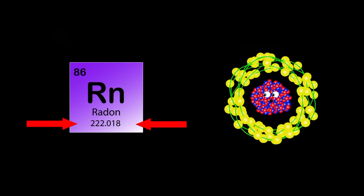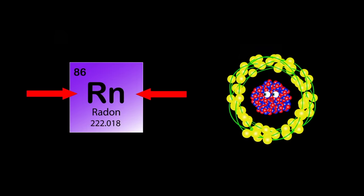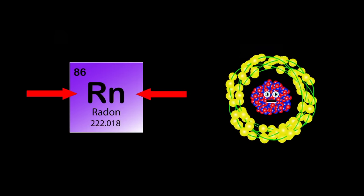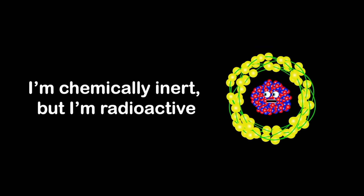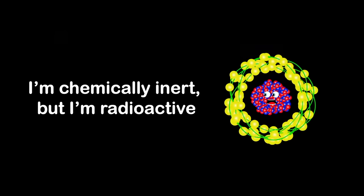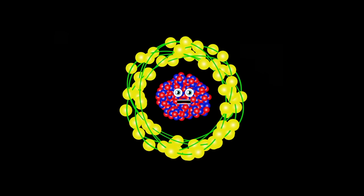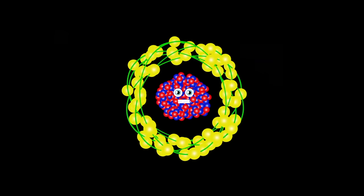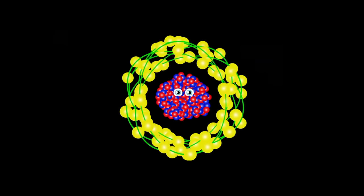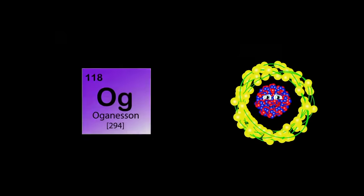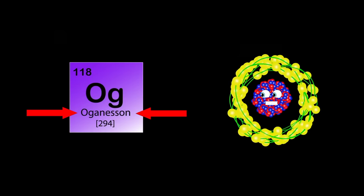Hi, I'm Radon. My atomic number is 86, my atomic mass is 222, my symbol is Rn. I'm chemically inert but radioactive. My emitted radiation is used in cancer therapy.